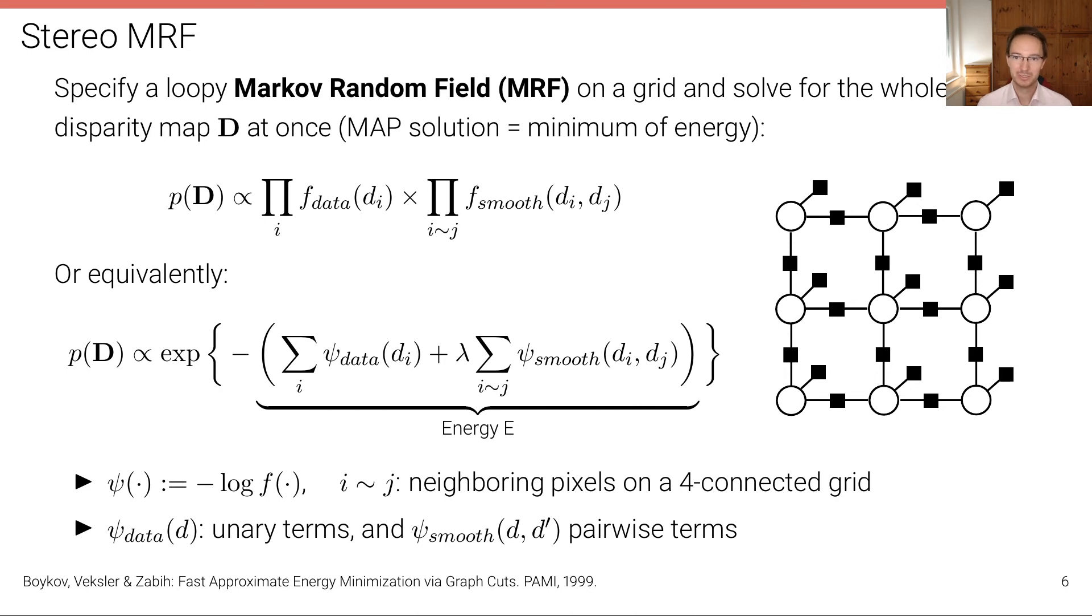And we can do this using a Markov random field on a grid graph. Here we see a four-connected grid structure graph corresponding to a three by three pixel image. Of course, if we apply this algorithm to a real image, this will be a much larger graph, but the structure will look the same. Here in this graph, every circle corresponds to a variable, so every circle corresponds to a pixel. And the variable is the disparity that we want to infer for that pixel. And then we have unary factors. These are the squares that are connected to only a single variable, and these are the matching costs that we can compute using a block matching technique, for example, or a Siamese network.